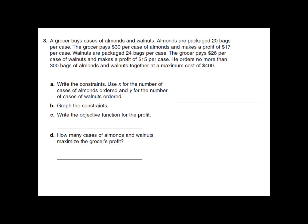Let's do one that's more of a story problem — these are going to be more difficult and more time-consuming. A grocer buys cases of almonds and walnuts. Almonds are packaged 20 bags per case; the grocer pays $30 per case and makes a profit of $17 per case. Walnuts are packaged 24 bags per case; the grocer pays $26 per case and makes a profit of $15 per case. When you see things like 'no more than,' you know we're going to be setting up some inequalities — these are going to be some of our constraints.